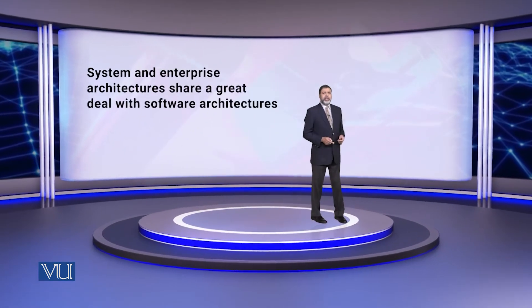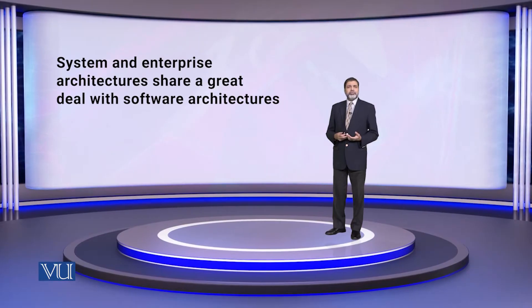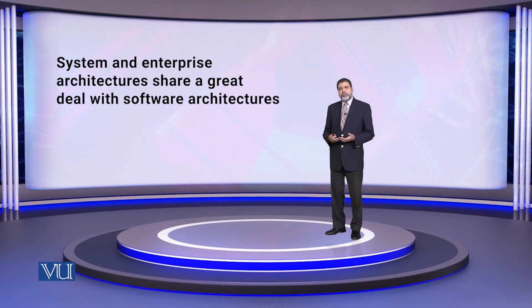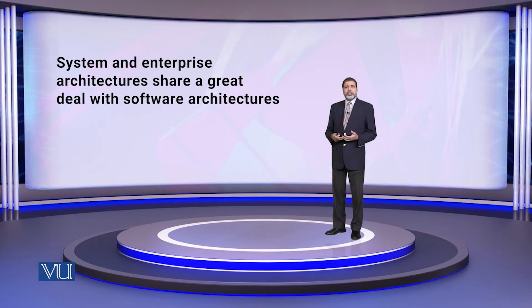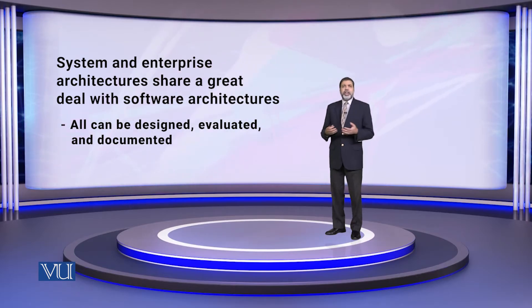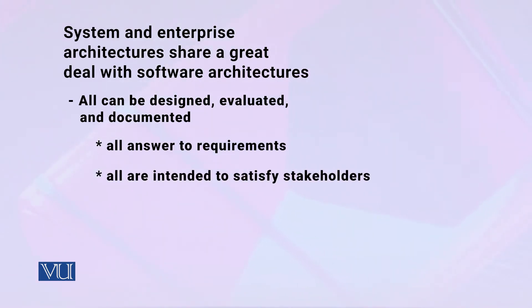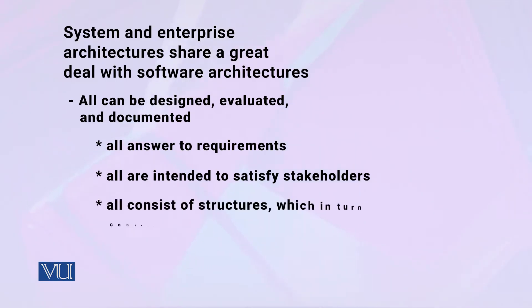System and enterprise architecture share a great deal with software architecture. These three types — software, system, and enterprise architecture — can all be designed, evaluated, and documented. They all address requirements, are intended to satisfy stakeholders, and consist of different types of structures, which in turn consist of elements and relationships.